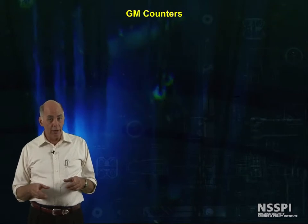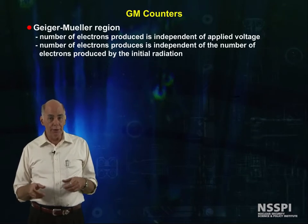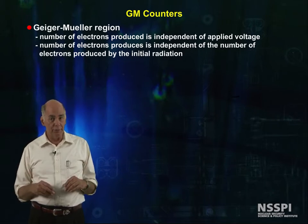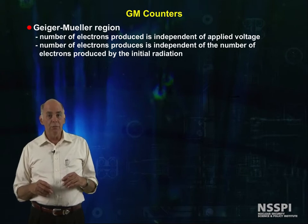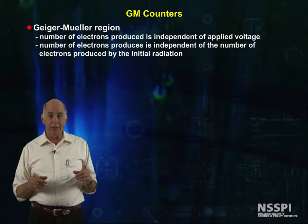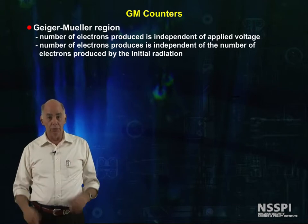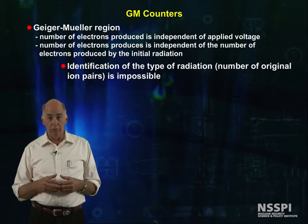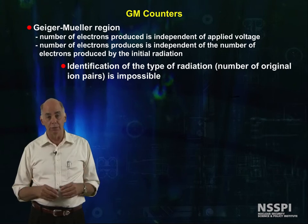Geiger-Mueller counters work in the GM region, where the number of electrons produced is independent of the applied voltage above the GM threshold, and the number of electrons produced in the gas is independent of the number of electrons produced in the initial radiation event. Therefore, identification of the type of radiation and the number of original ion pairs is impossible.